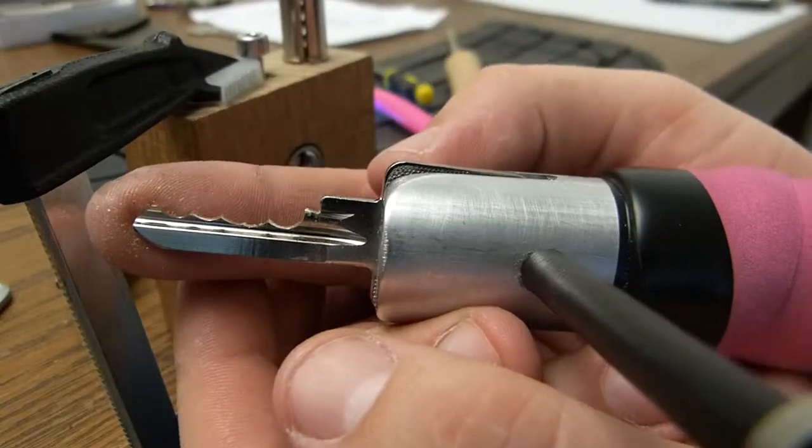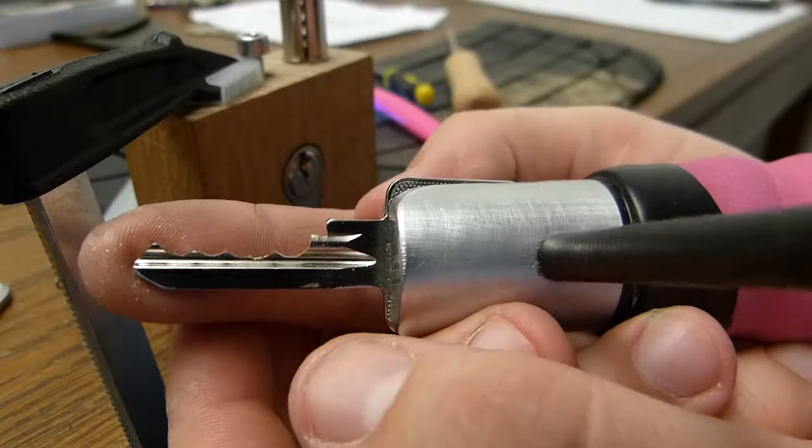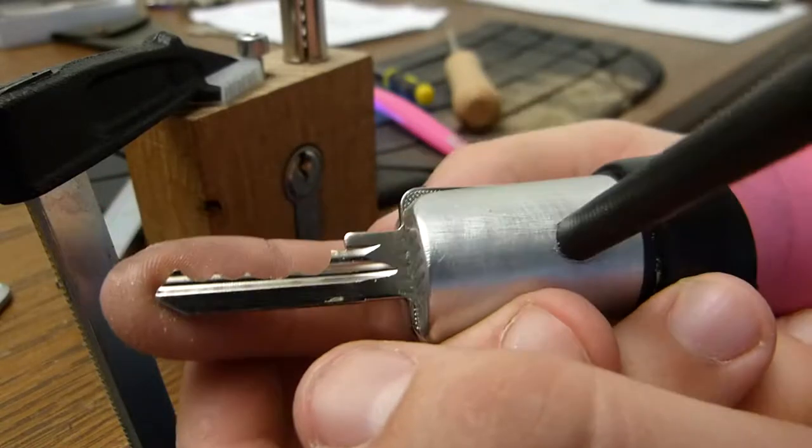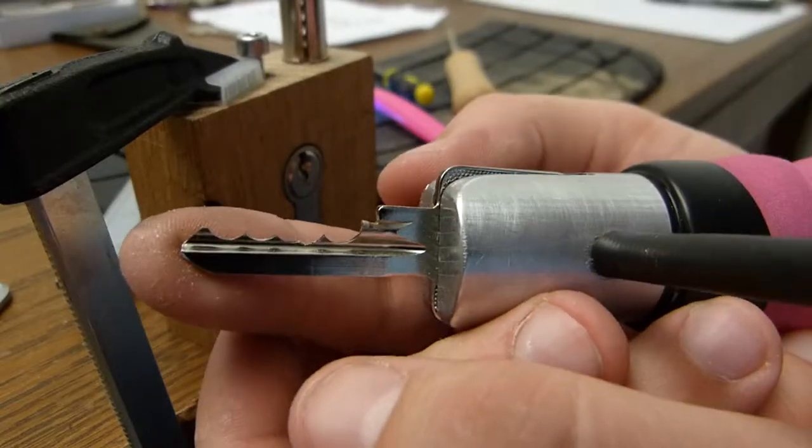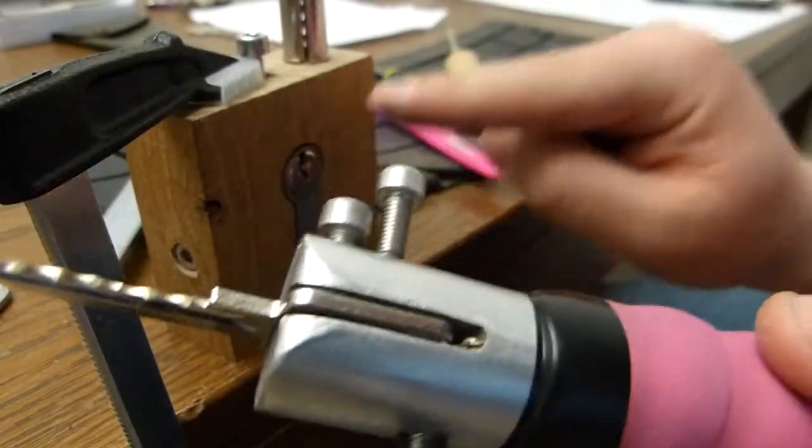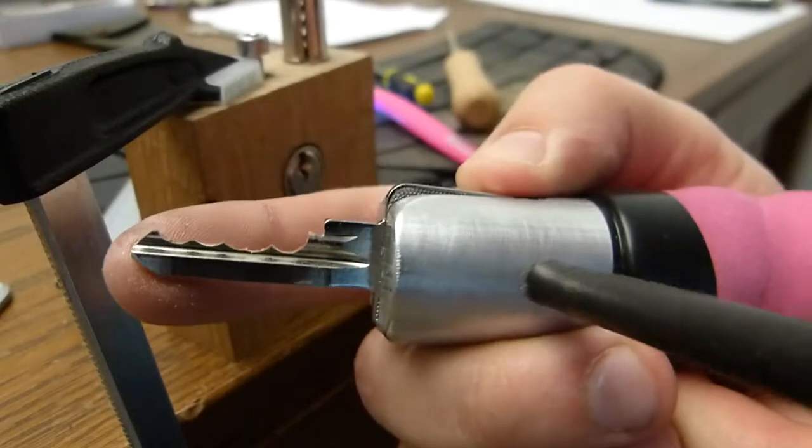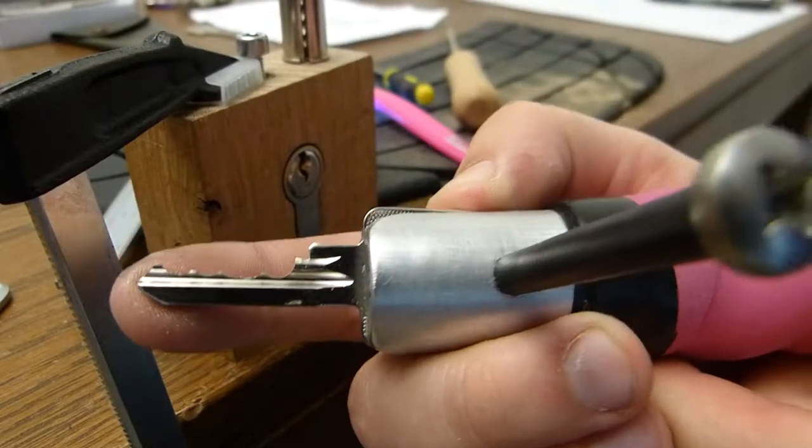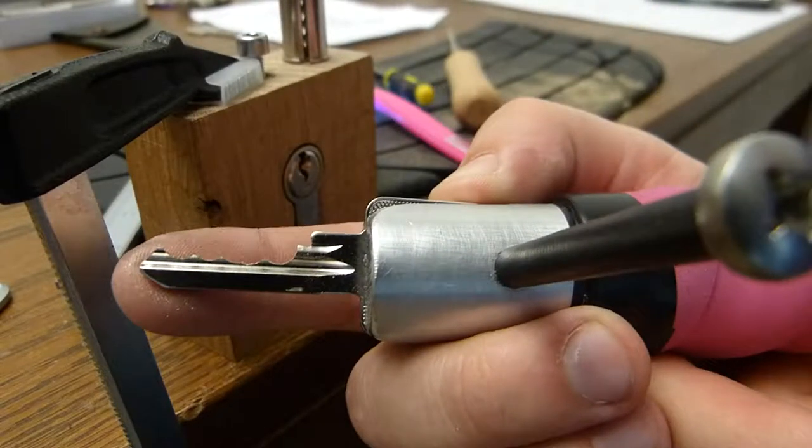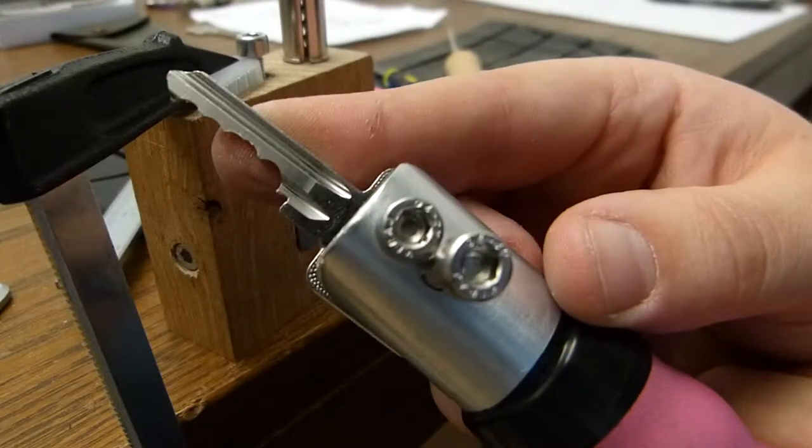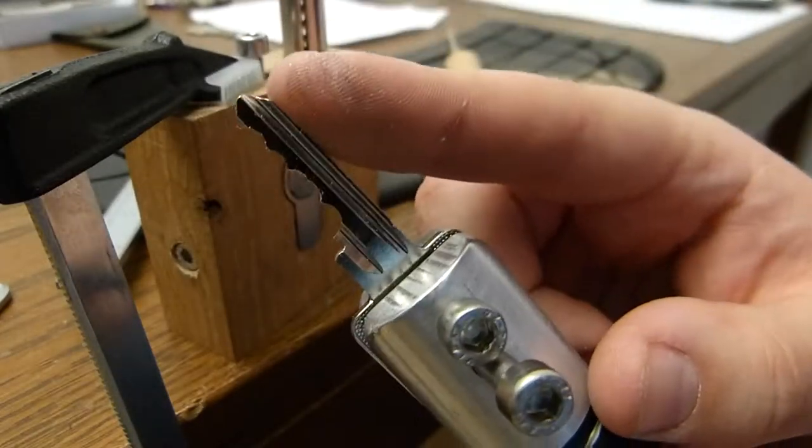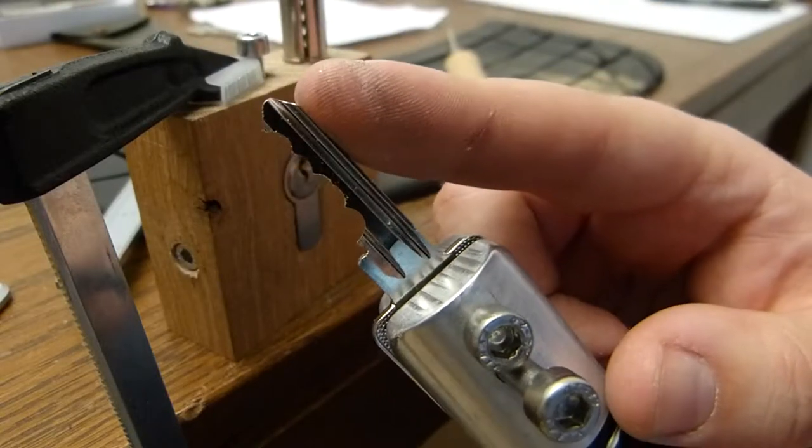So after all this time, this is an 88888 key. I know for a fact that this lock does not have all key pins as an 8, so I'm going to start over. When this happens there's no problem, just start over.